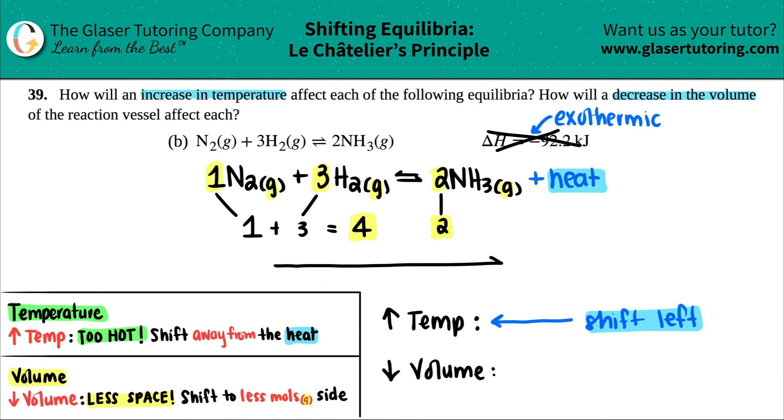So I'm going towards that lower number. So in this case, I'm going to shift this way. So I'm going to shift to the right. And then if we're shifting towards the right, that means that this side will now increase and this side will now drop. That's it guys.